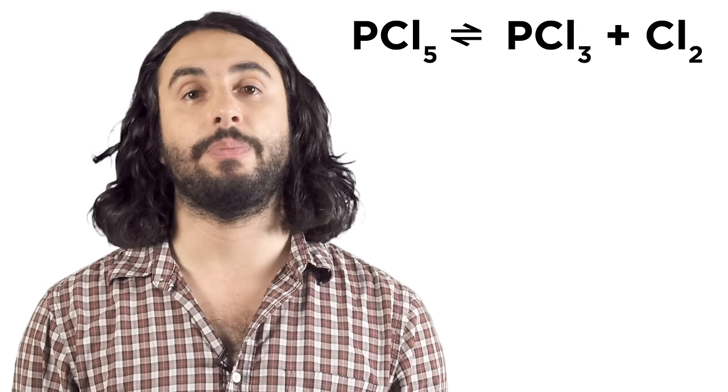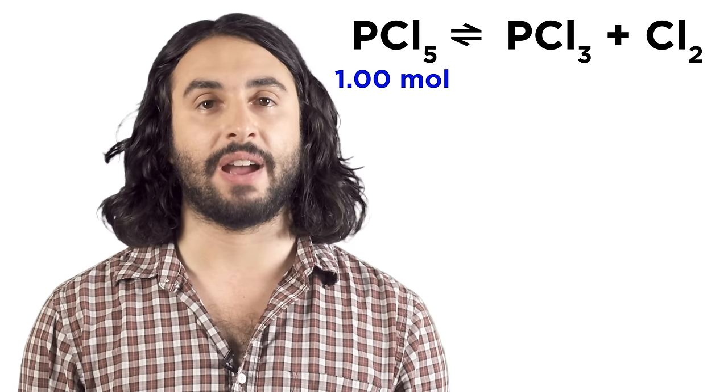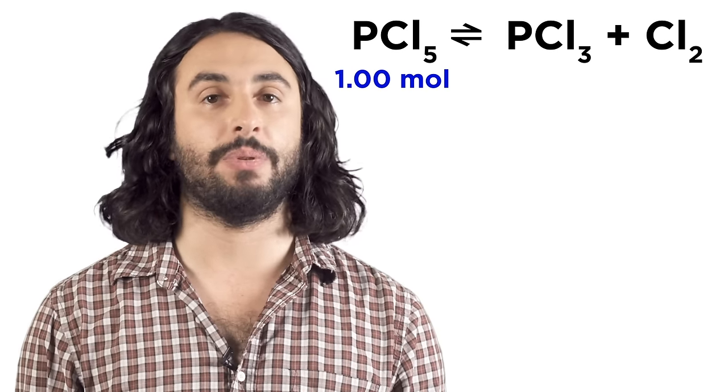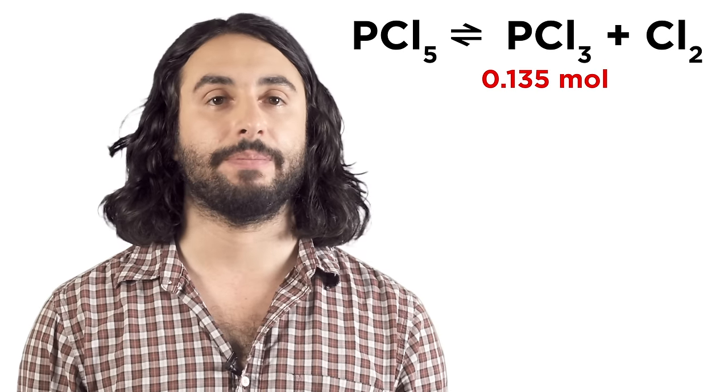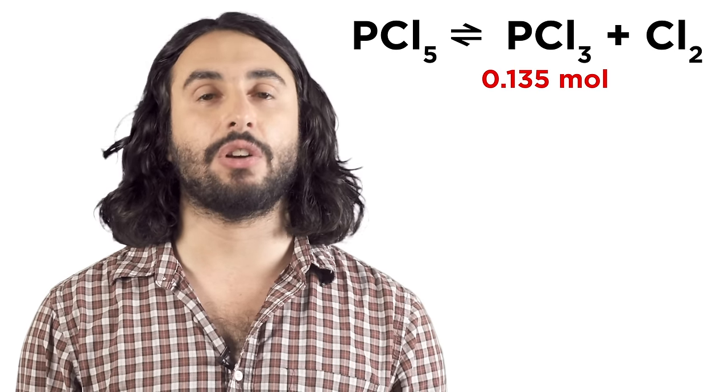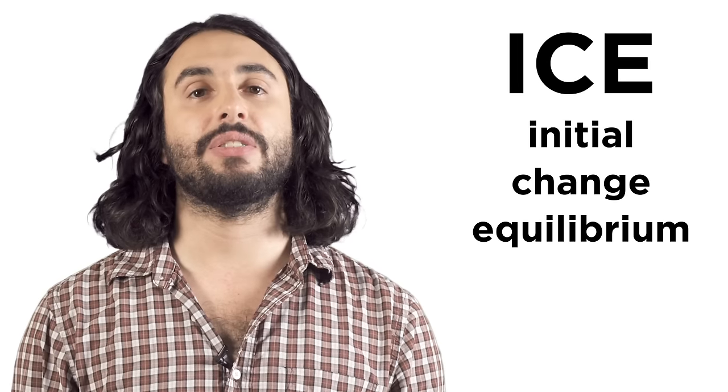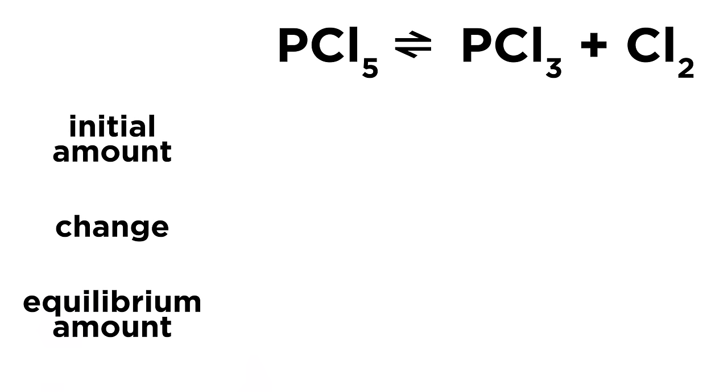For example, let's look at this equilibrium. Let's say we start with one mole of PCl5, allow the system to reach equilibrium, and then once at equilibrium we measure that there are 0.135 moles of PCl3. So how much of the other two things are there? To answer this, we can make something called an ICE box. These letters stand for initial, change, and equilibrium. We set them up like this. For initial, we put the initial amounts of each thing. We started with just one mole of reactant, so we put one there and zeros for the products since there wasn't any of those at first.